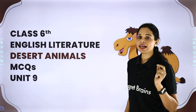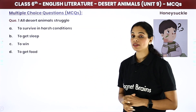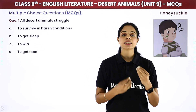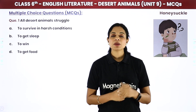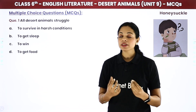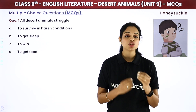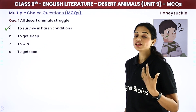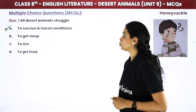The chapter is Desert Animals. First question: All desert animals struggle — जितने भी desert animals होते हैं, वो किस चीज से struggle करते हैं? Options: to survive in harsh conditions, to get sleep, to win, or to arrange food. The answer is: to survive in harsh conditions, क्योंकि वहाँ extreme temperature होता है।